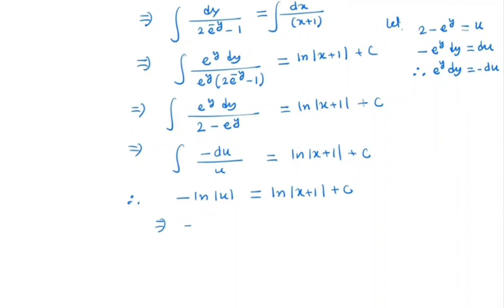Now what is u? Substituting back, u = 2 - e^y, so -ln|2 - e^y| = ln|x+1| + C. By simplifying and taking C as ln(C'), we have ln(2-e^y)^(-1) = ln|x+1| + ln|C'|, which gives us (2-e^y)^(-1) = C'(x+1).